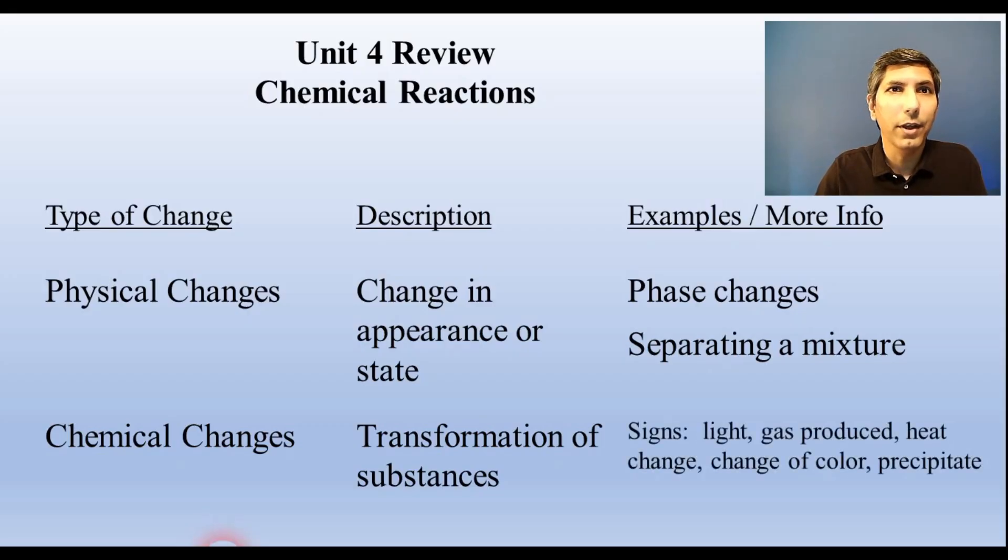There are a few main signals that a chemical change is taking place. Light is given off, gas might be produced, a large change in temperature, a change of color, a precipitate being formed. These are all good ways to know a chemical reaction is taking place.